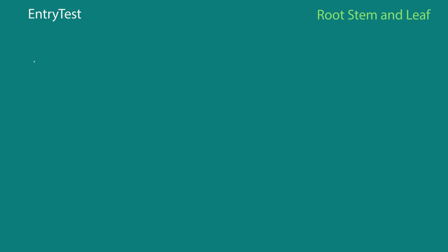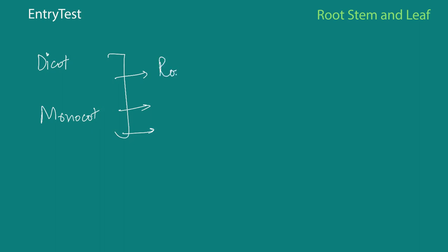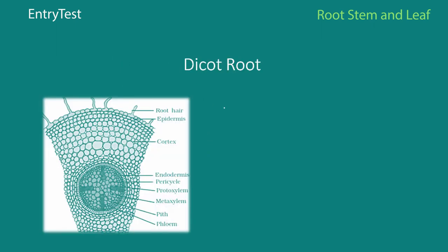We are currently doing the anatomy and physiology of plants and animals. What we are going to cover in this video is the structure of dicots and monocots with respect to three important organs: the root, the stem, and the leaf. So let's get started with the first thing, which is the dicot root.